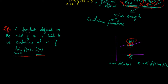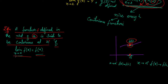In the previous video we stated that a function f, defined in the neighborhood of a — including at a — is said to be continuous at point a if the limit as x approaches a of f(x) equals f(a). Now in order to understand what we mean by a function being discontinuous at a point, let me split this definition into parts.